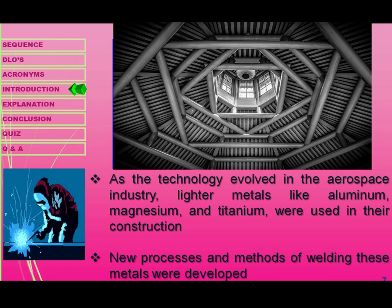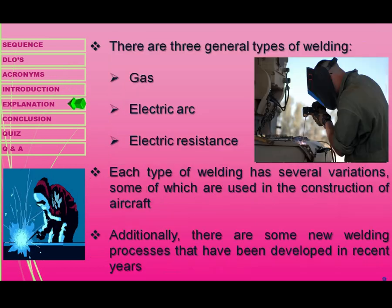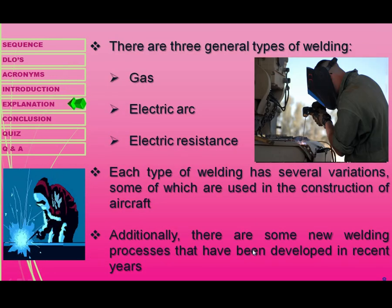New processes and methods of welding these metals were developed. In modern aircraft we have aluminum, magnesium, and titanium available, so a technician must have good knowledge about all types of welding. The welding techniques used for titanium are totally different from those used for magnesium, because one is a soft metal and the other is a very hard and tough metal. It is important that we have good knowledge about all types of welding.